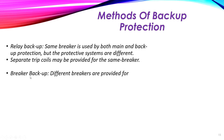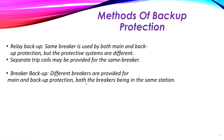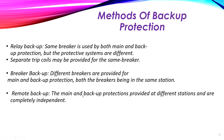The second type is breaker backup. In relay backup we back up the relay, but in breaker backup we add an additional circuit breaker. Different breakers are provided for the main and backup protection, both breakers being in the same station. So we have two breakers — one which is the main protection breaker and the second is the backup breaker. If the main breaker did not work, the backup one will trip the circuit. For remote backup, the main and backup protections are provided at different places or stations and are completely independent from each other.